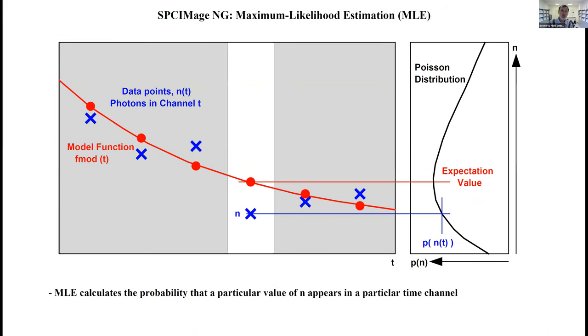What can we do? The solution is the maximum likelihood estimation. Let's assume the red curve again is our model function. The blue dots are photon numbers in the time channels of our fluorescence decay. We take the value from our model function and construct a Poisson distribution which has exactly this value as an expectation value.